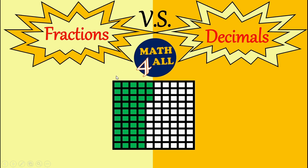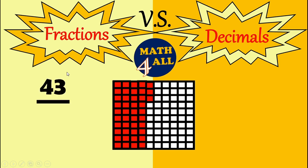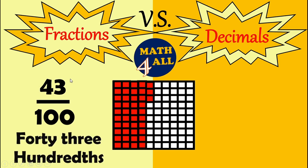Now here we have one big square broken into 100 parts. We need to know how many parts we have out of 100. Let's count: 10, 20, 30, 40, 41, 42, 43. So if we are going to write the fraction it will be 43 over 100, and you can read it as 43 hundredths. On the other hand, for the decimal we will write zero point 43 — it's so easy, you just copy the numerator — and we read it again as 43 hundredths.